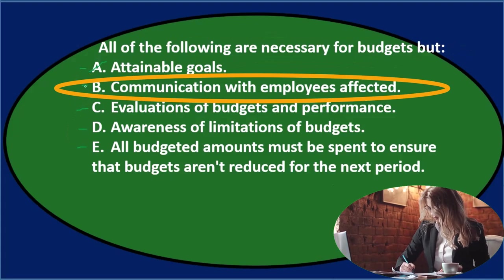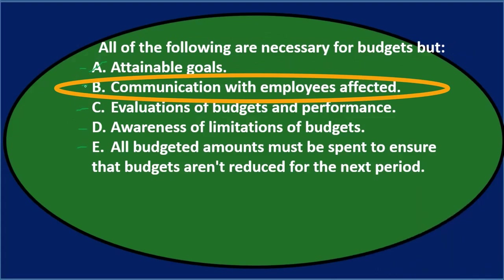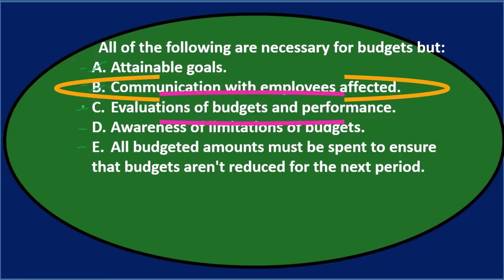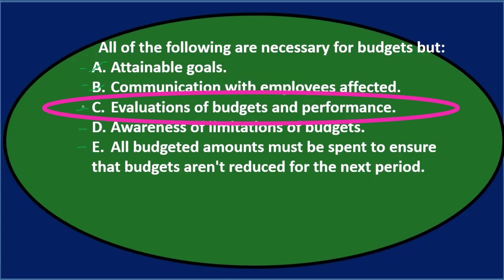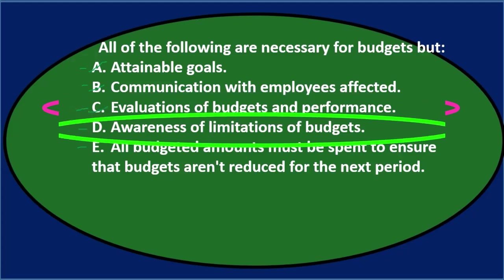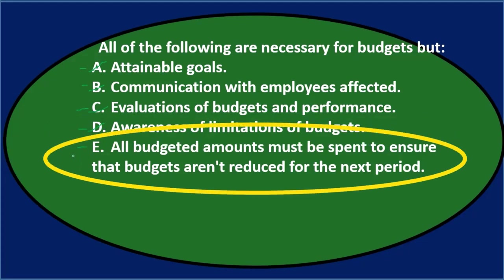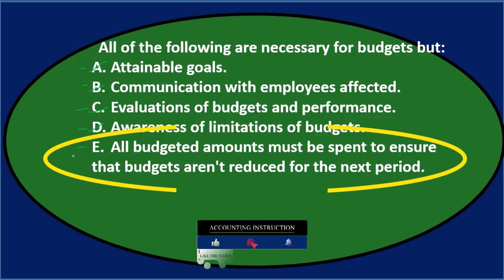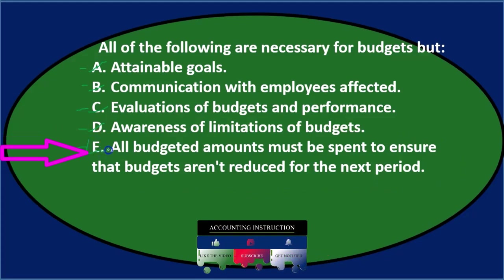B says communication with employees affected — you could argue it's not necessary, but it would be a good practice and probably part of the process. C says evaluations of budgets and performance — you'd want to compare budget to actual performance, so that's part of the budgeting process. D says awareness of limitations of budgets — maybe not strictly necessary, but it's good to have. E says all budgeted amounts must be spent to ensure budgets aren't reduced for the next period. That doesn't sound proper. That's one of the problems we need to be aware of, not one of the necessities of budgeting.